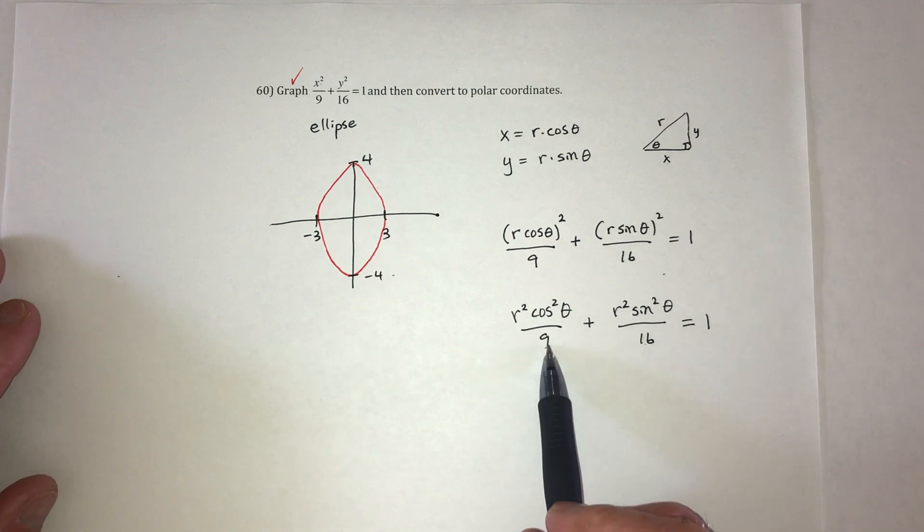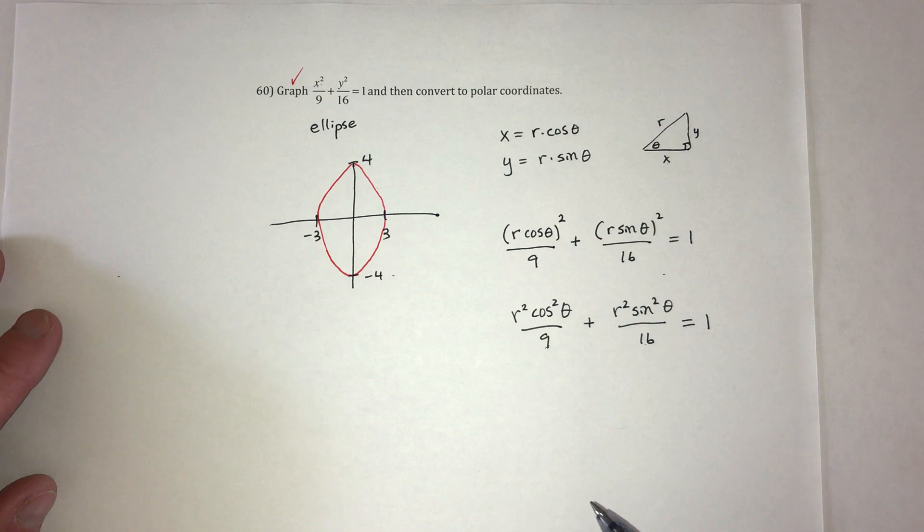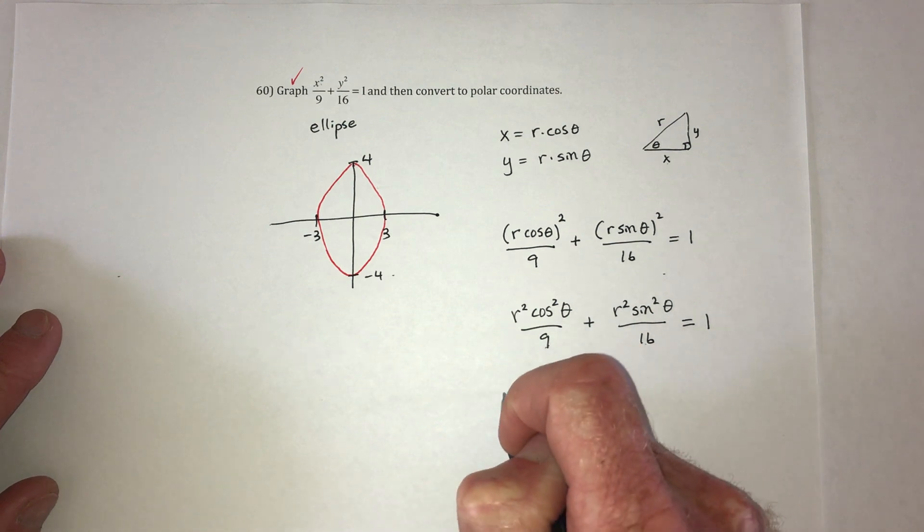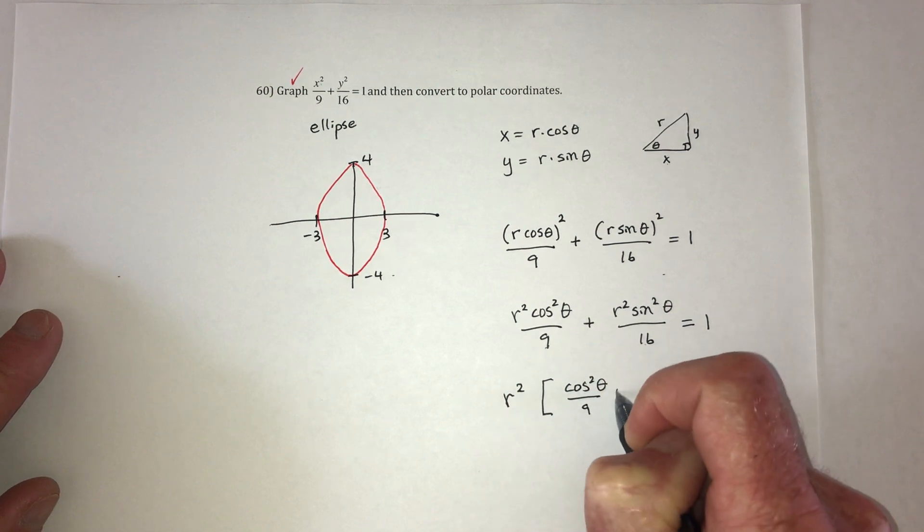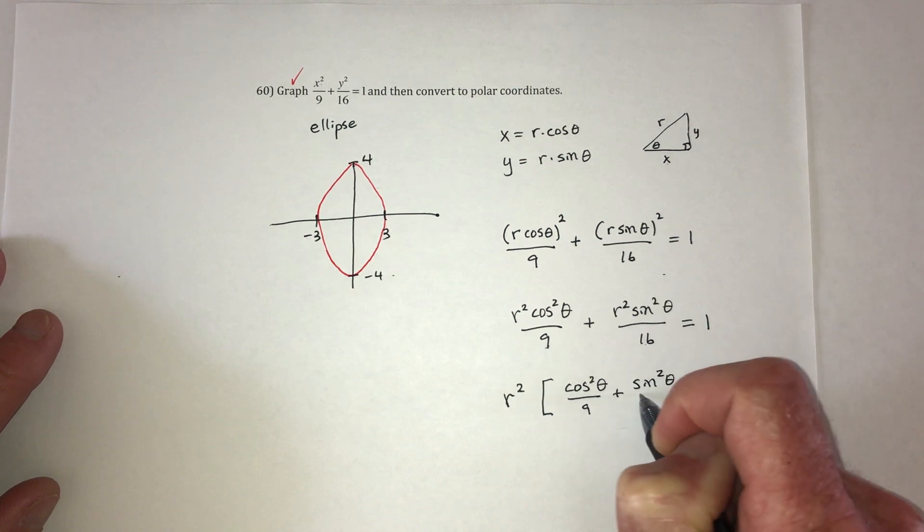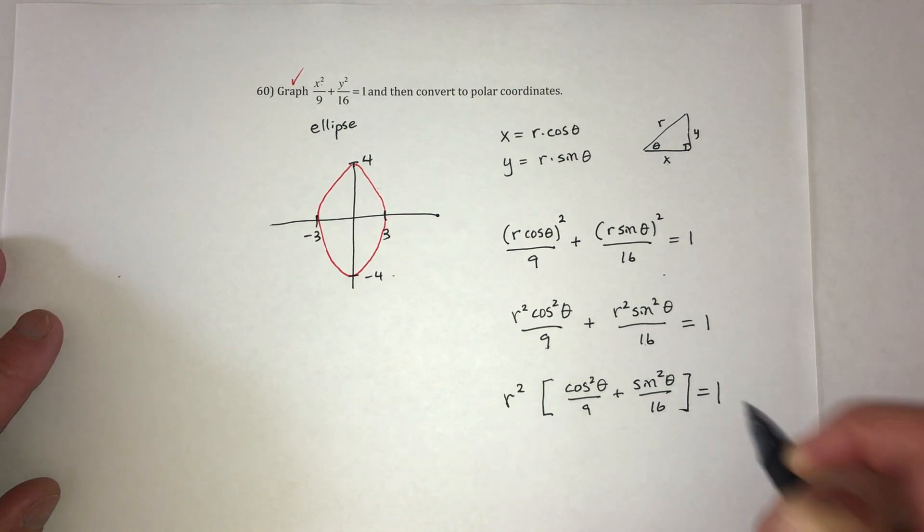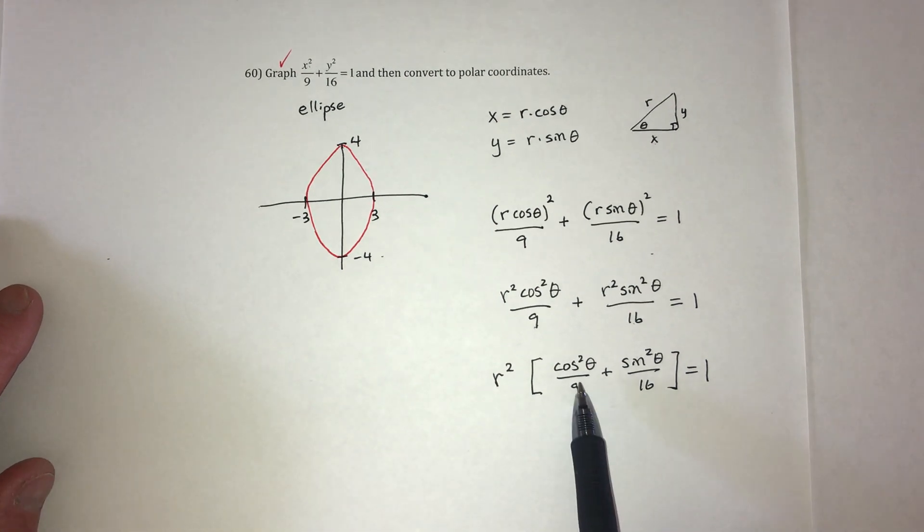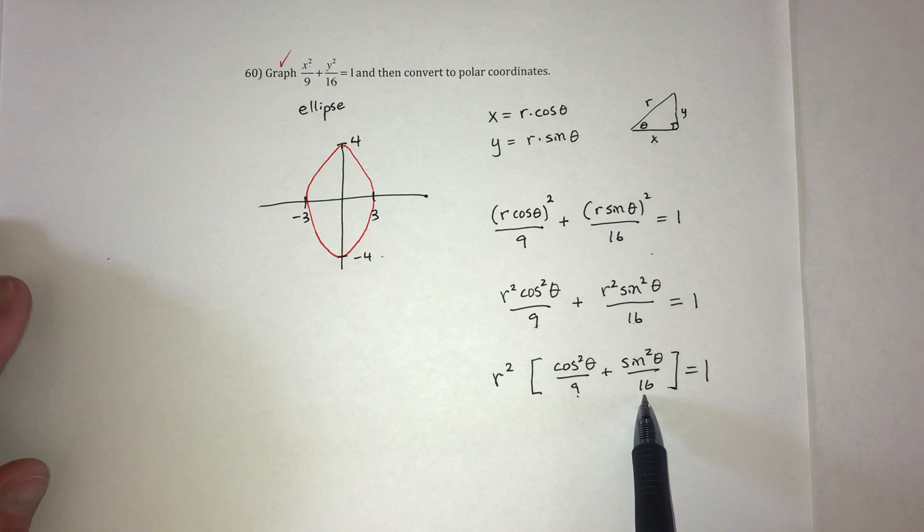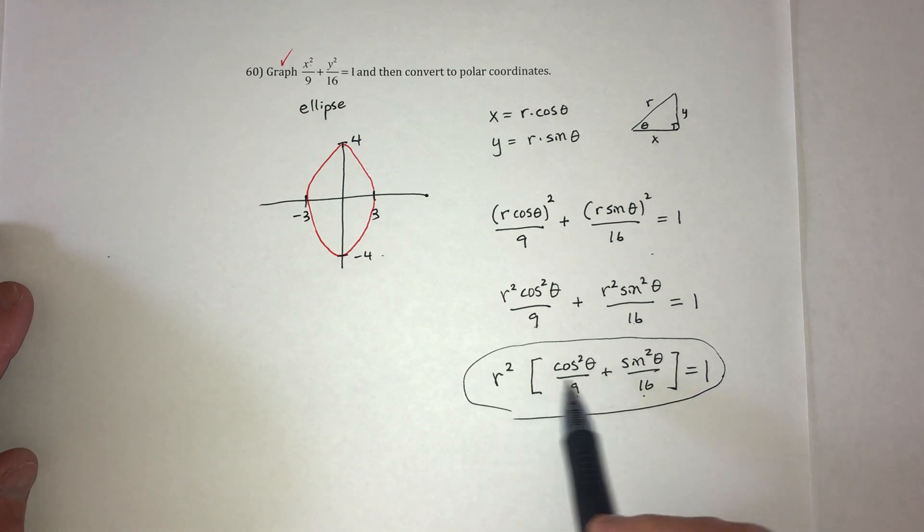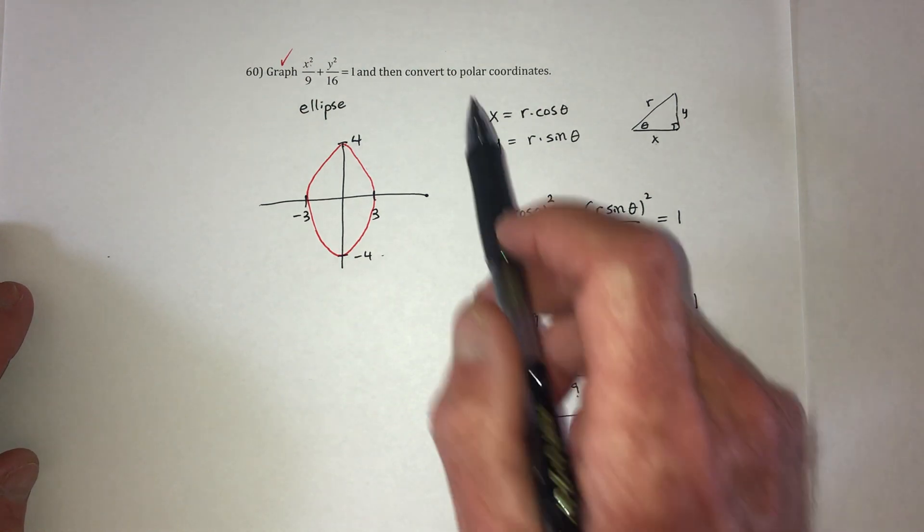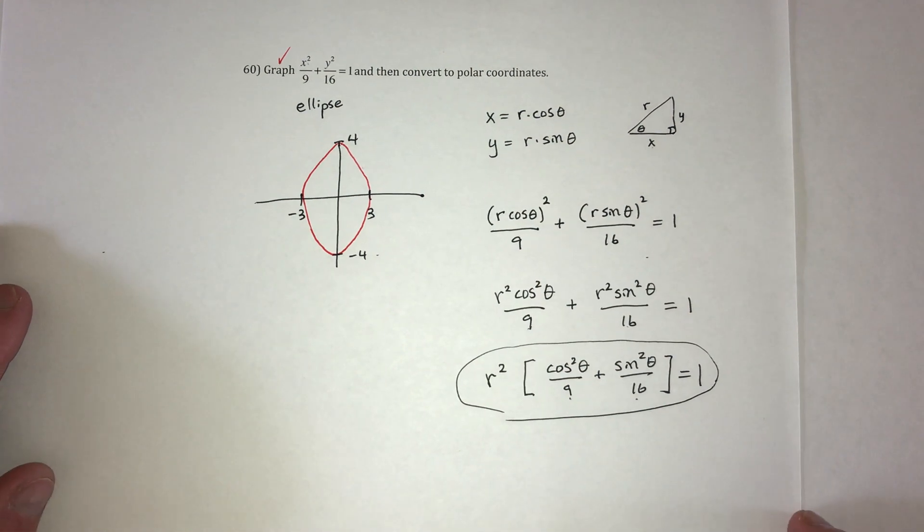Now because these denominators are different, I can't really simplify. I guess I could factor out an r squared since that's common. But it's not really going to simplify anymore. It almost looks like it says sine squared plus cosine squared, which would equal 1, except this one's over 9 and this one's over 16, so those can't be combined. So we call it finished. Once you've gotten rid of all the x's and y's, then it's in polar form. Try to reduce it as much as you can. Otherwise, it's done.